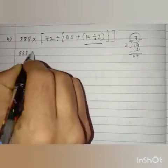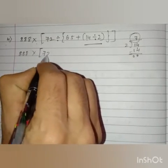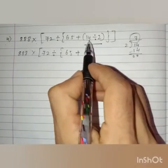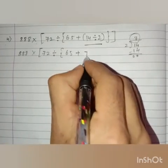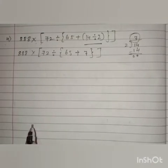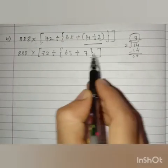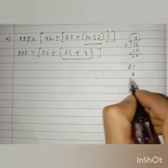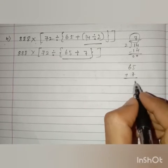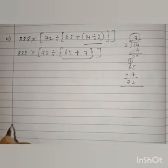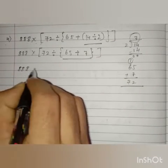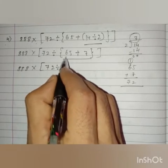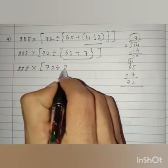Remaining as it is: 888 into big bracket open, 72 divided by curly bracket open, 65 plus 7, curly bracket close, big bracket close. After removing the common bracket, we remove the curly bracket. The operation is addition: 65 plus 7 — 5 plus 7 is 12, carry 1, 1 plus 6 is 7 — so we get 72. Remaining as it is: 888 into big bracket open, 72 divided by 72, big bracket close.